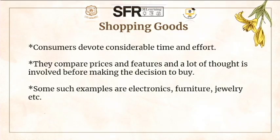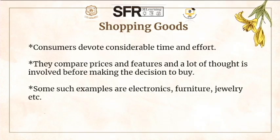Shopping goods: to shop for these consumer products, consumers devote considerable time and effort. Before making a purchase decision, the consumer spends some time and effort evaluating whether to buy the product or not. They compare prices and features, and a lot of thought is involved before making the decision to buy. Examples include electronic items like computers, tablets, mobile phones, and also furniture and jewelry items. These products generally fall in a high price range and are pre-planned purchases.